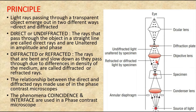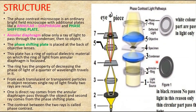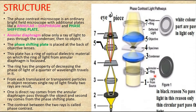The phase contrast microscope is essentially an ordinary bright field microscope with two additional plates. One is called the annular diaphragm, and the other is the phase shifting plate. These two plates enable some of the image-forming rays to be phase shifted with respect to the others.